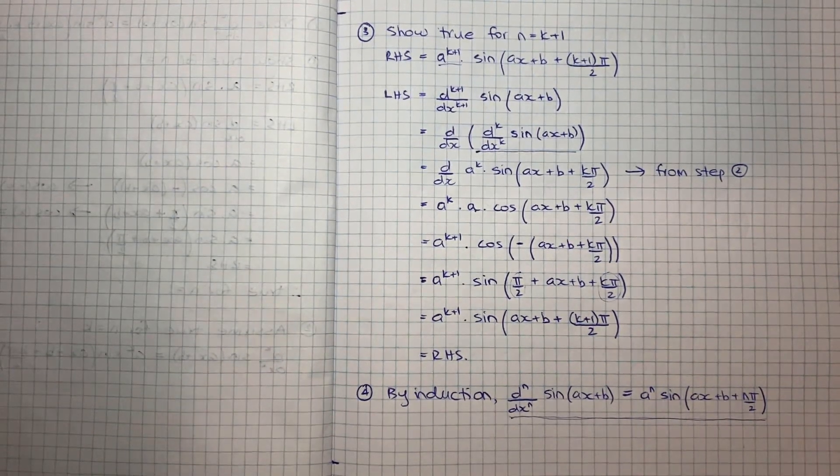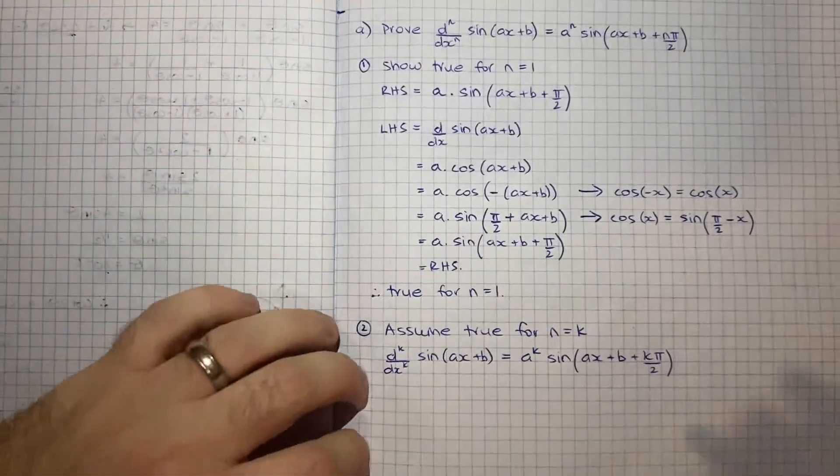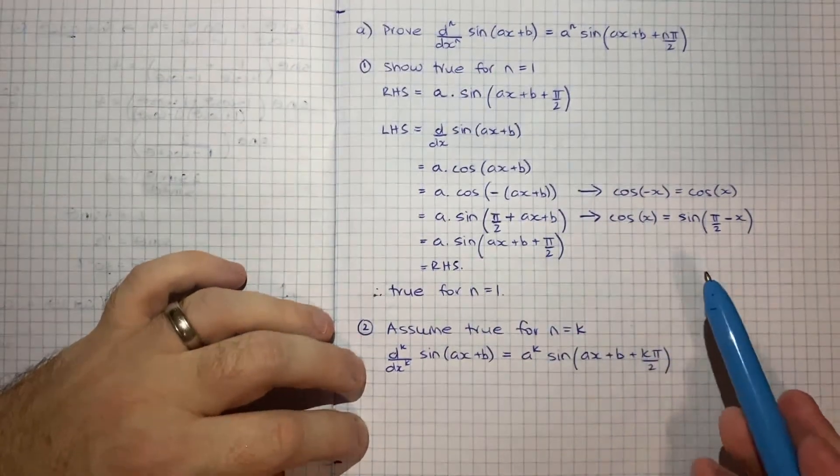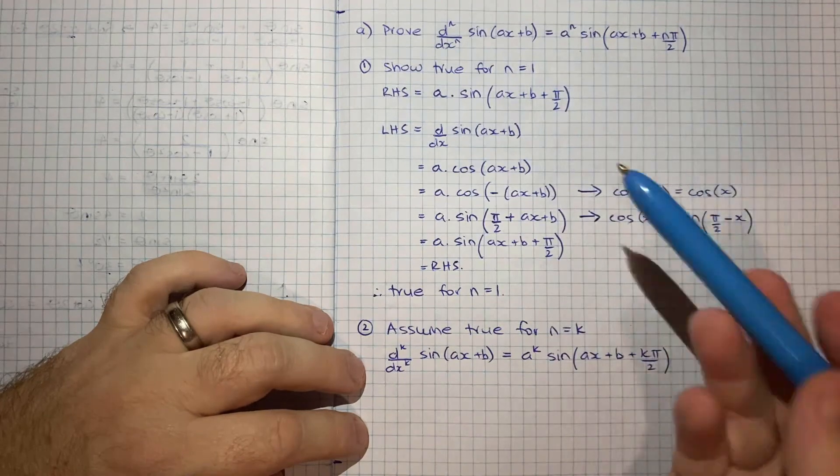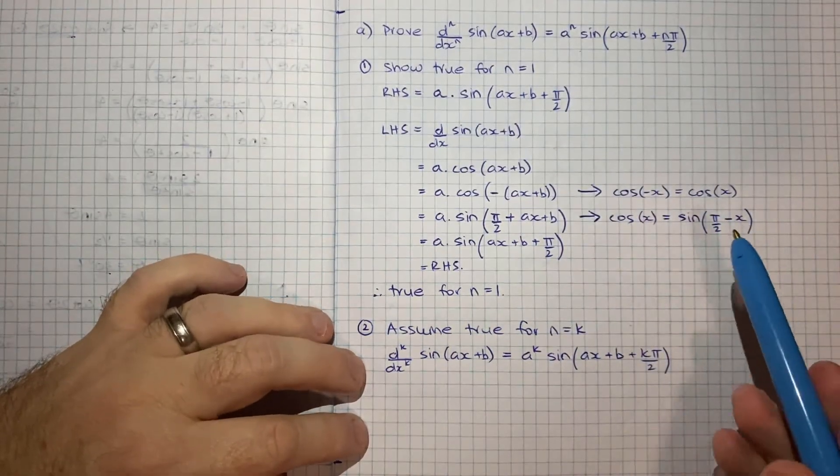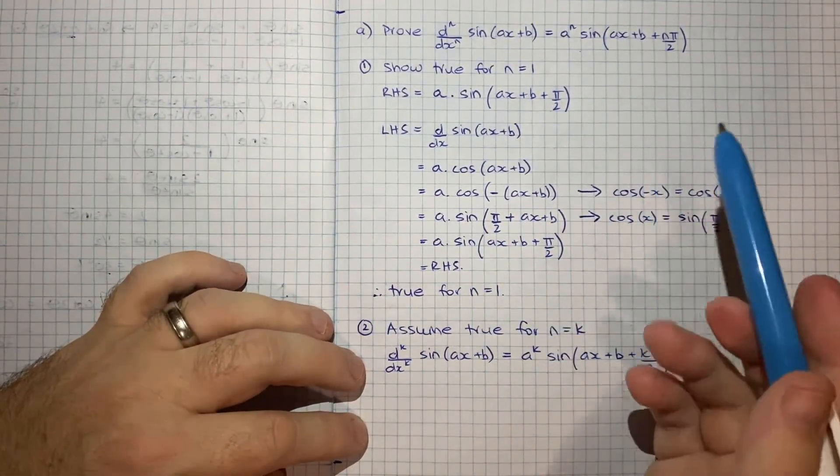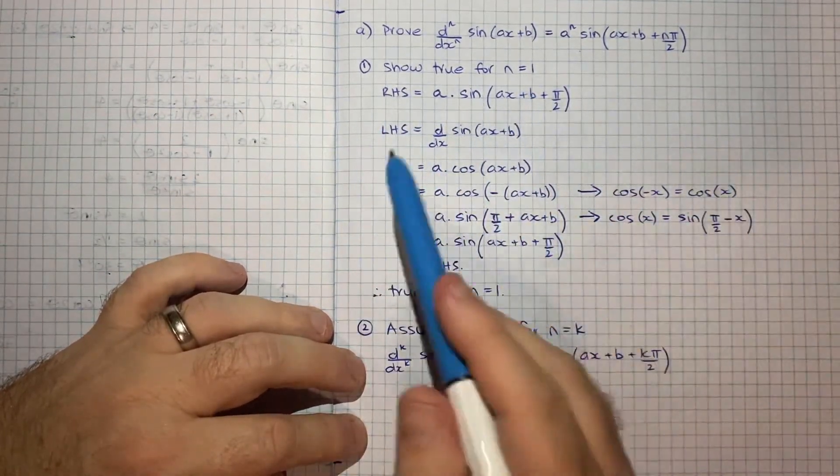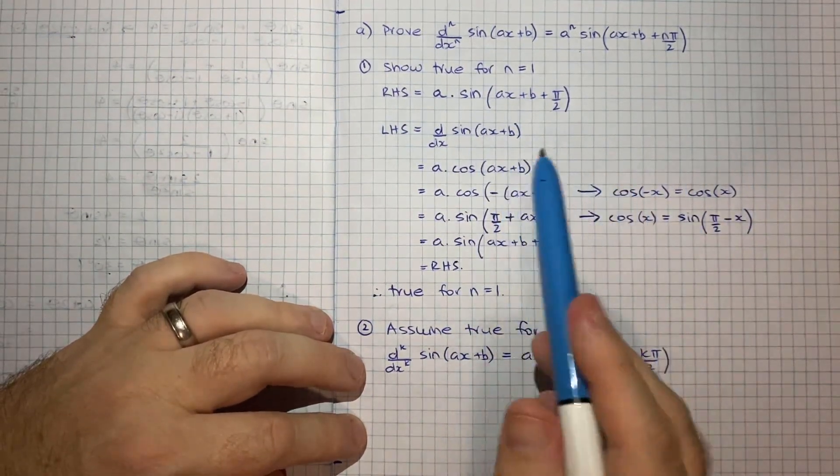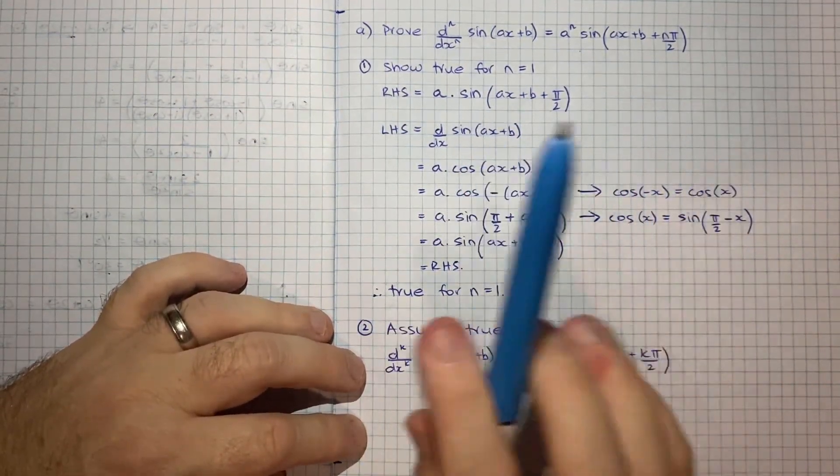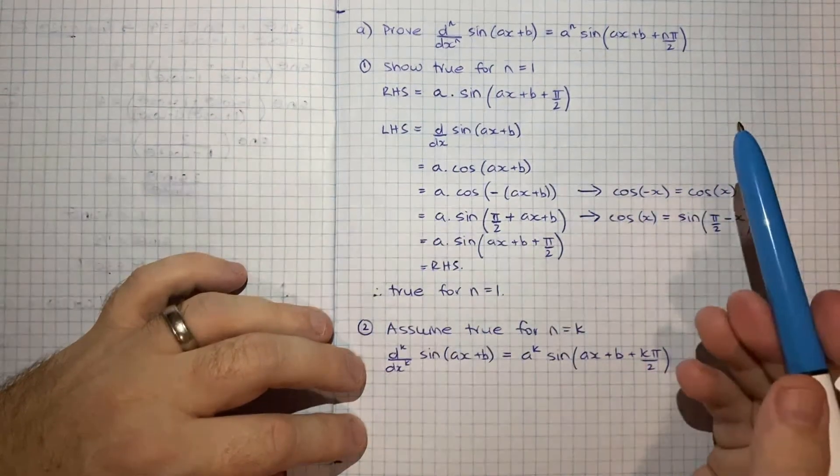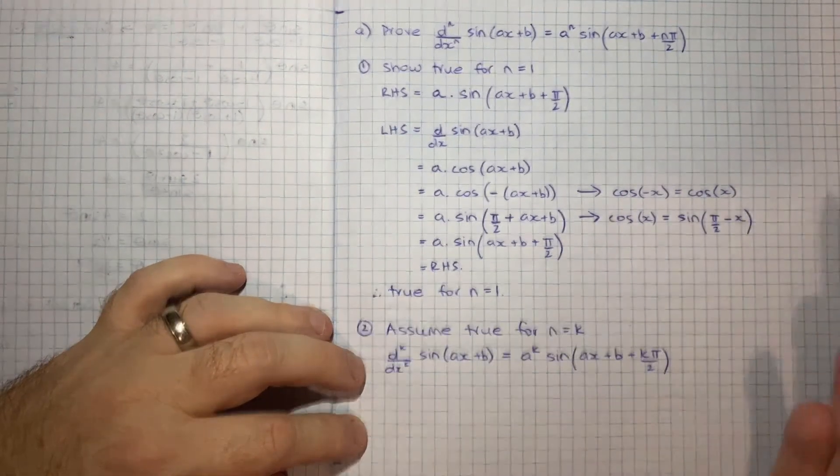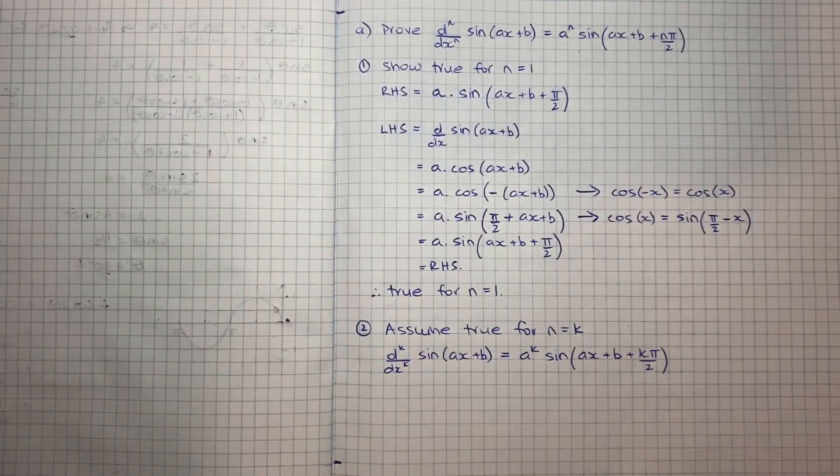It's interesting to kind of note that the periodic nature of the sine curve results in essentially a kind of periodic derivative. Because we know in its simplest form when we differentiate sine we get to cos. When we differentiate cos we get to negative sine. So we're kind of always jumping back and forth. And because the sine and cos curves are kind of offset by π/2, we effectively get this relationship. Which is quite interesting to see. So hopefully that all made sense.